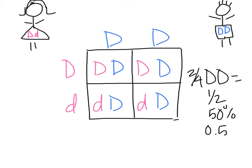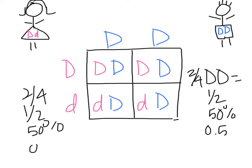The probability from this mom and this dad to get a homozygous dominant offspring is one half. Half of their kids, by probability, should be homozygous dominant. What about the other half? One big D and one little d — two out of four, which is the same as one half, 50%, 0.5 — will be big D, little d, or heterozygous.